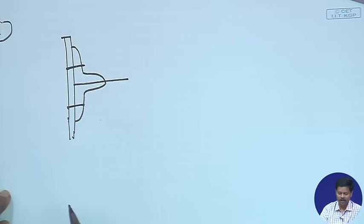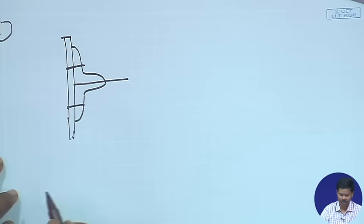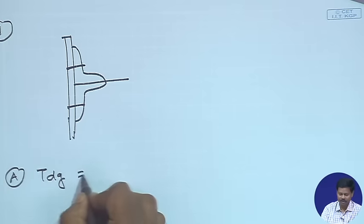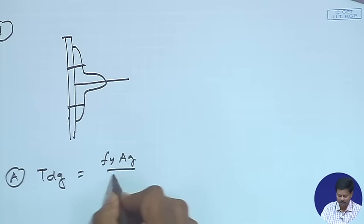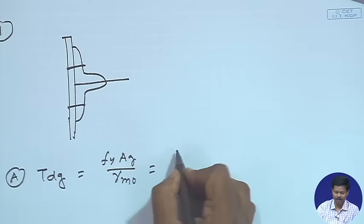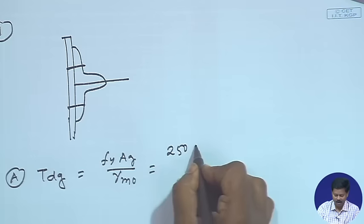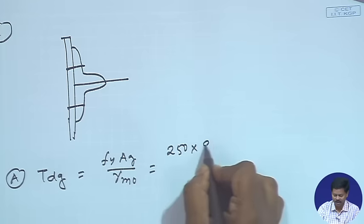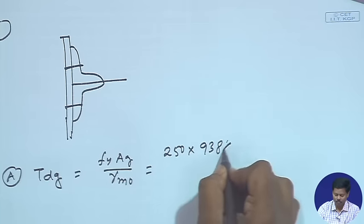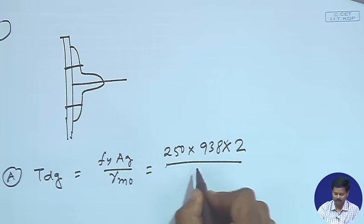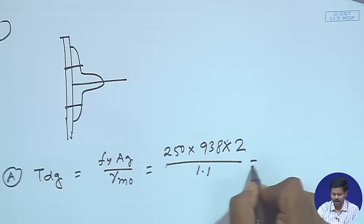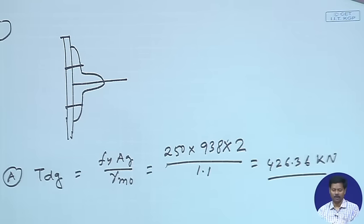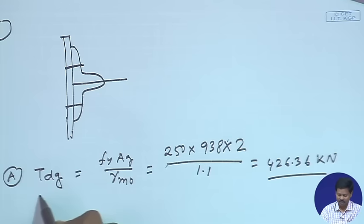First we will calculate the strength due to yielding of gross section. TDG we can find out as fy × Ag / γm0. fy will be 250 and Ag, the gross area of ISA, is 938 and 2 angles are there, so into 2 divided by γm0 that is 1.1. After calculation we can find out 426.36 kilo Newton. So strength due to yielding of gross section, TDG, is this value.